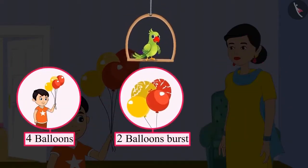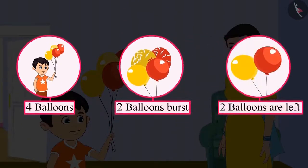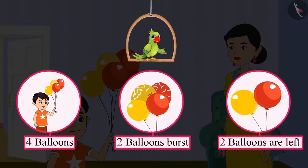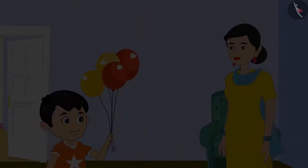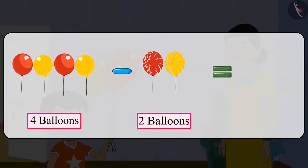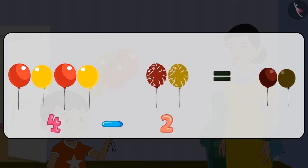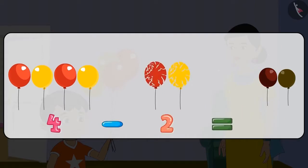So now, if out of these four balloons two balloons burst, then how many balloons are left? Yes, two balloons. Can you also write this in a systematic way? On subtracting two from four, two are left. This means four minus two equals two.